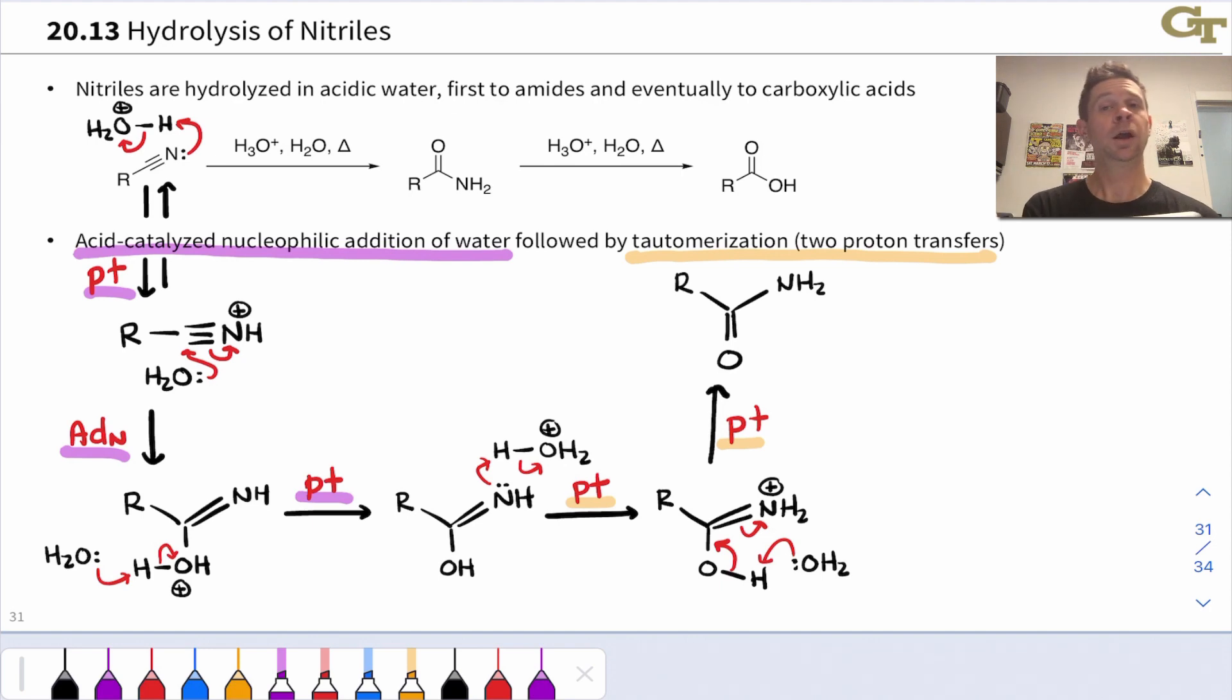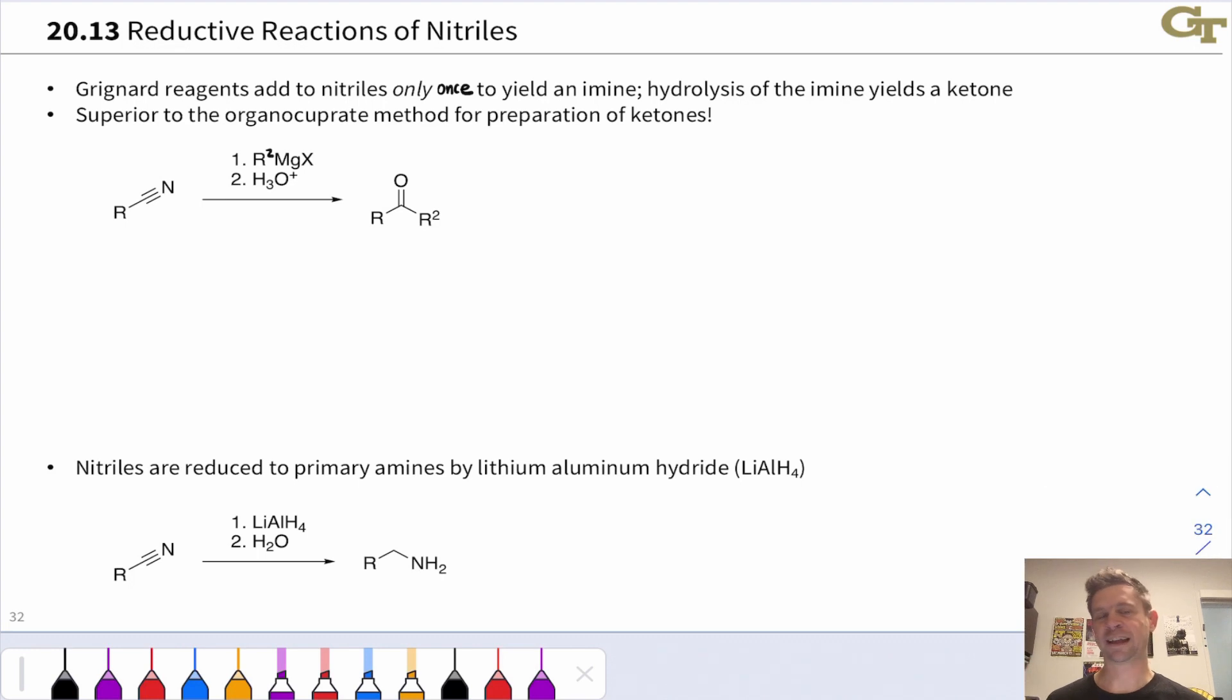So it does take a good bit of juice to get this to go. We need to use heat and quite often long reaction times to hydrolyze a nitrile. And once we're at the amide, we can stop there and isolate the amide product, or we can continue using acid and heat to go all the way to the carboxylic acid. And you don't need to show these conditions any differently to show hydrolysis to the amide or carboxylic acid. For example, in a synthesis problem, you can just write H3O+, H2O, and heat and write either the amide, if that's what you want, or the carboxylic acid, if that's what you want.